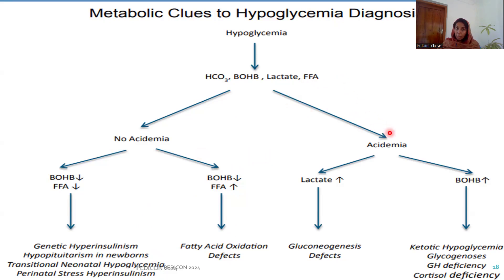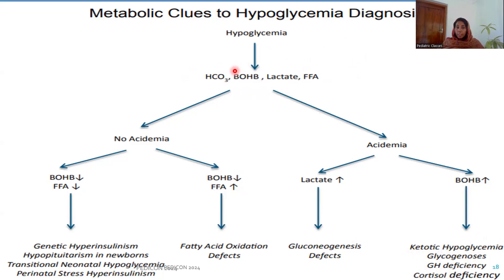In the second branch of the flowchart, if there is acidosis, look at the lactate level. If lactate is high, it may be a gluconeogenesis defect. If beta-hydroxybutyrate (ketone levels) are high, consider ketotic hypoglycemia, glycogenosis, GH deficiency, or cortisol deficiency. To summarize: in a patient with hypoglycemia, always check bicarbonate, beta-hydroxybutyrate, lactate, and free fatty acids in addition to glucose. If there is acidosis, use the acidosis branch; if no acidosis, check beta-hydroxybutyrate and free fatty acids.